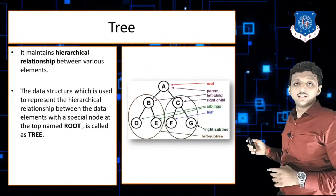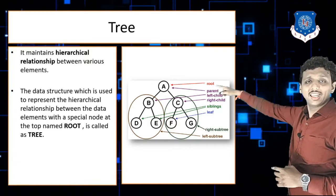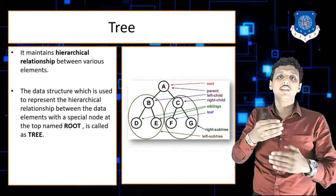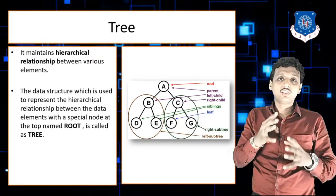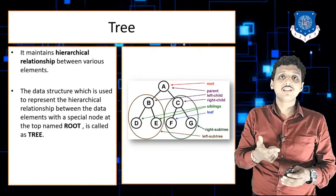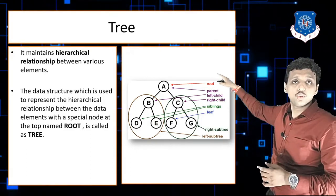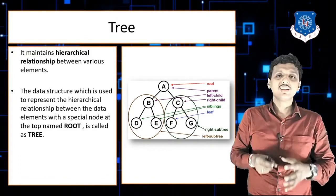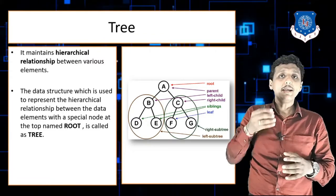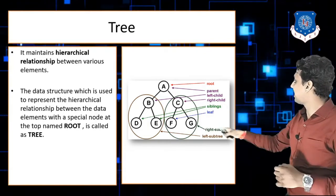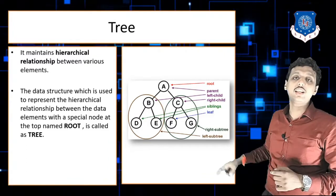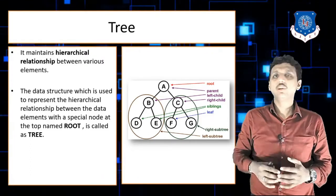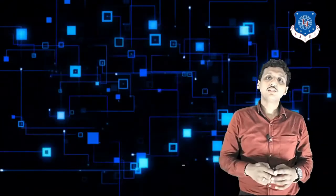In the figure, node A is known as the root node. Each node contains a parent node and a child node. Just like a real tree has leaves and a root, the top node is known as the root node and the last node is known as a leaf node. Leaf nodes do not contain any child node.